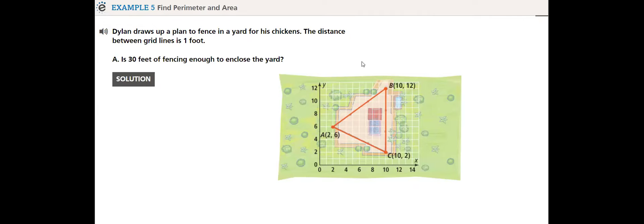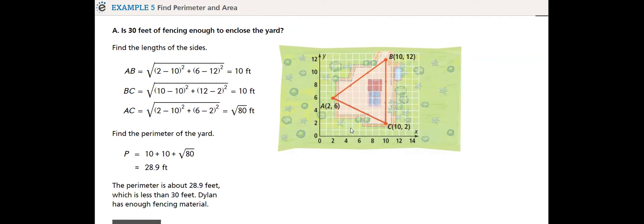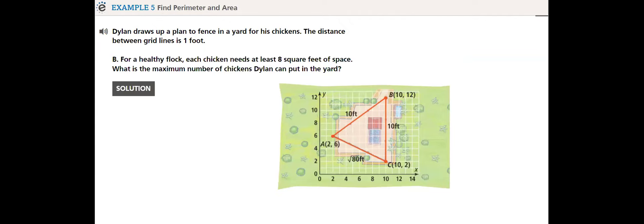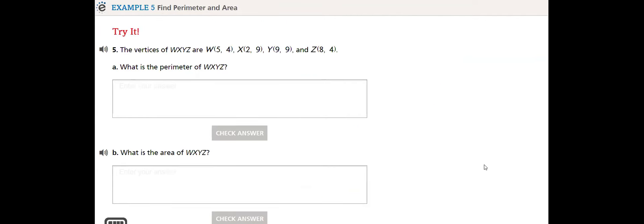Now in this example, we will find the perimeter and area. Perimeter is the distance around the figure. Area for a triangle is half base times height, and we will connect it to a real-life example. Another example question B, and of course you will try it by yourself.